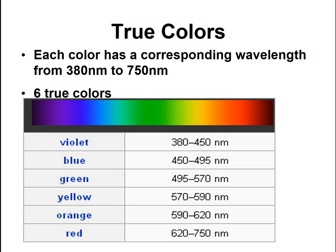As you probably learned back in elementary school, there are six true colors. You probably learned about seven — Roy G. Biv — but indigo is not really considered a true color. So you have your six true colors, and each of these corresponds to a wavelength — actually, a variety of wavelengths.